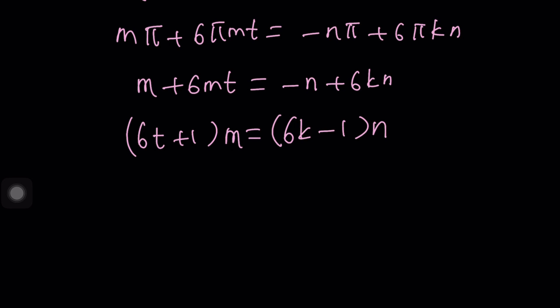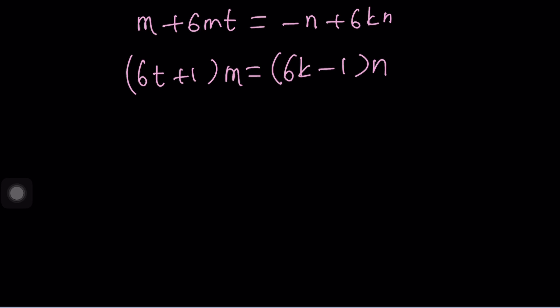I mean can m and n be 5 at the same time? That's a good question. Let's go ahead and find out. Suppose they're both 5 because we know that they have to be equal, right? So from here we get 30t + 5 = 30k - 5. Put the k and t together. 30(t - k) = -10. Uh-oh.